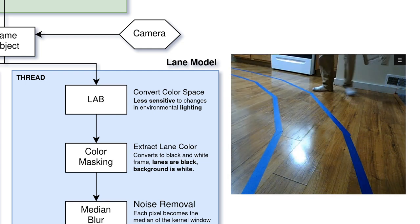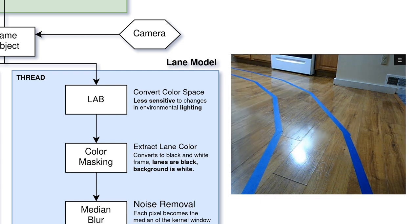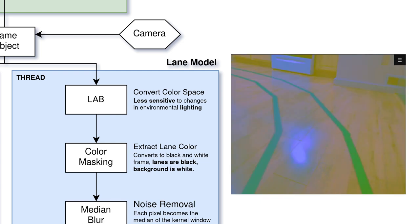As an antidote, we convert the frame to the LAB color space. The LAB color space separates the luminosity of the frame into its own channel, so the other two channels, which represent color, are less susceptible to changes in light. This allows us to tune our model to look for a specific color that is mostly independent from lighting conditions.